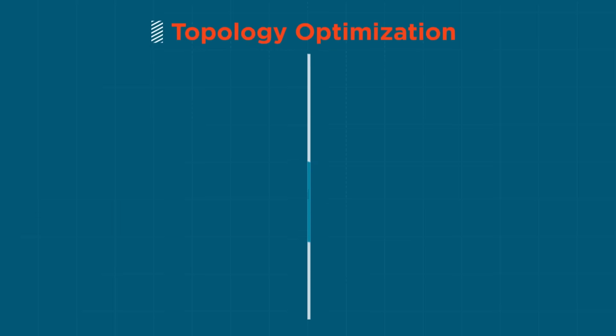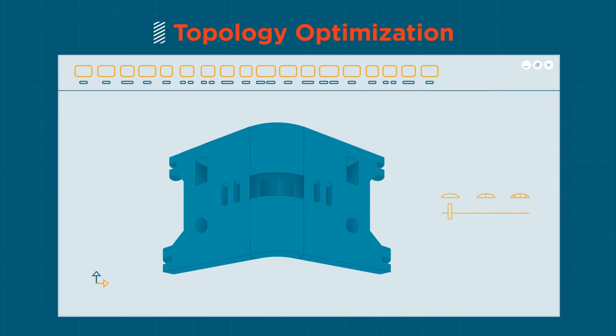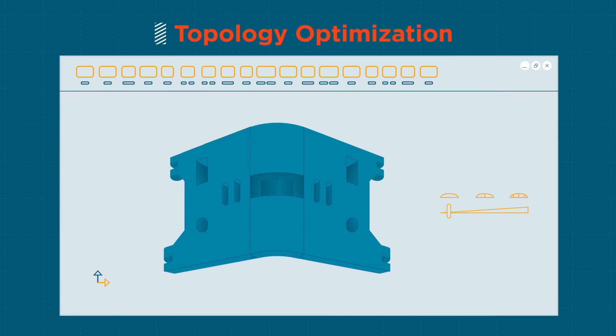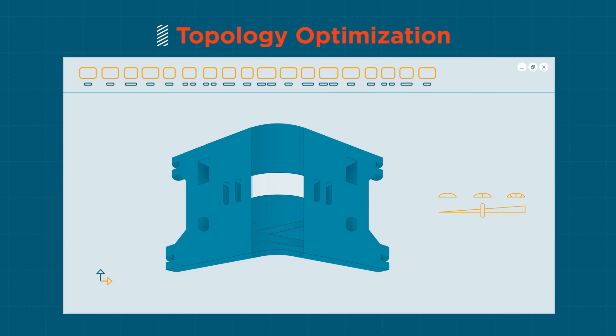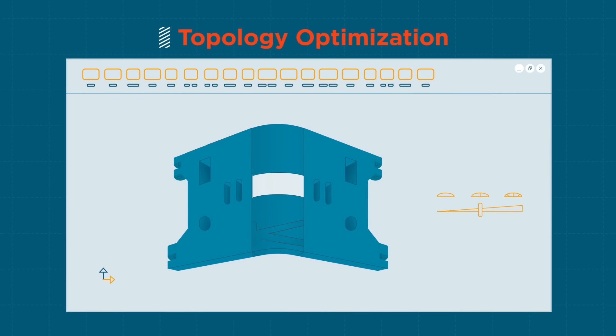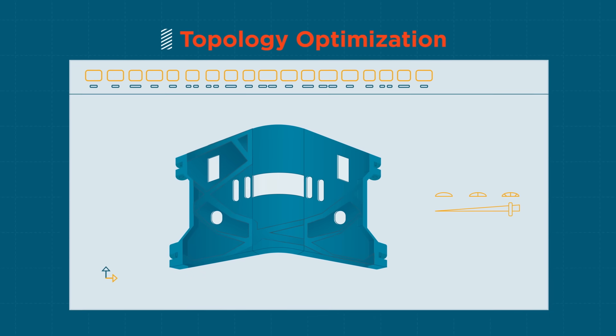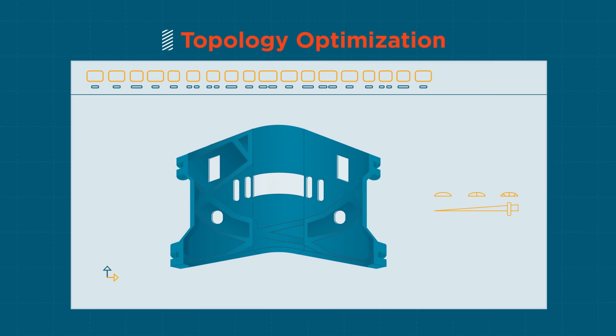Topology optimization takes it from there, generating optimal, manufacturable structures — parameters that meet performance objectives with minimum mass or maximum stiffness.